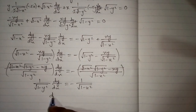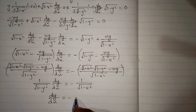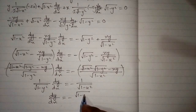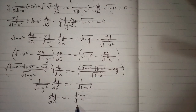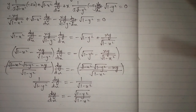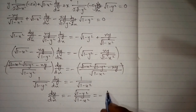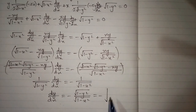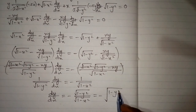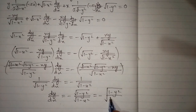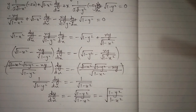Therefore dy/dx equals minus square root of (1 minus y squared) over square root of (1 minus x squared), which can also be written as minus square root of (1 minus y squared) over square root of (1 minus x squared), and this is the answer.